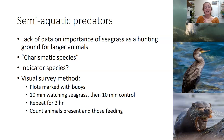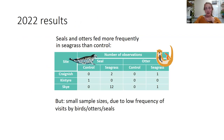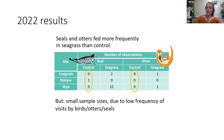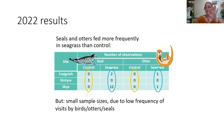I repeated the surveys several times over a few days, counting the number of animals present and whether they were feeding. One slight issue: at the last site, some juvenile herring gulls decided they wanted to peck the buoys and kept popping them. From last year's results on seals and otters, I really didn't see very many overall, but I only saw one seal that looked like it might be feeding in the control sites, whereas in the seagrass sites I saw many more seals and otters.